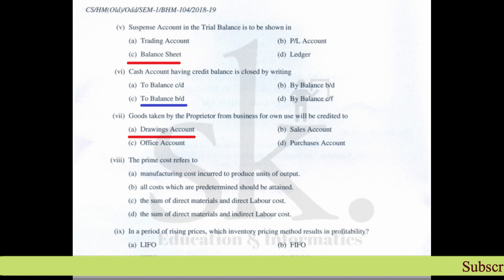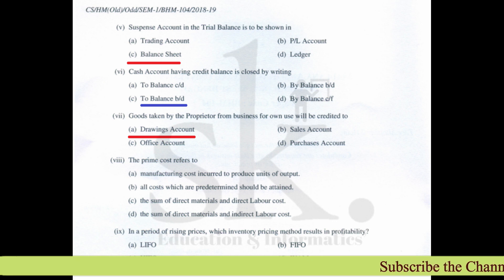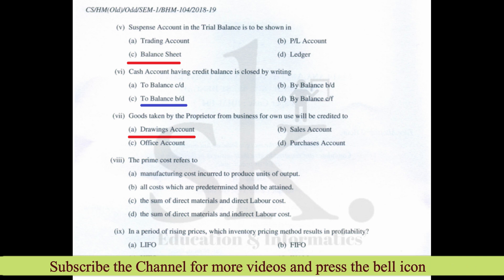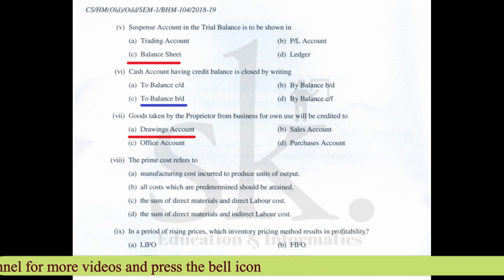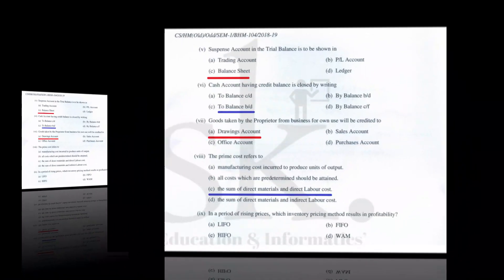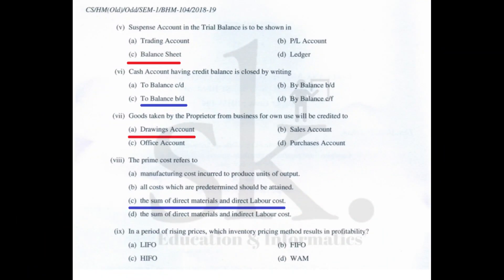Question number seven: goods taken by the proprietor from the business for his own use will be credited to — goods withdrawn by the proprietor for personal purpose are termed drawings. The correct option is A, drawings. Question number eight: prime cost refers to the summation of direct material cost and labor cost. The correct option is C.